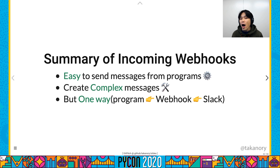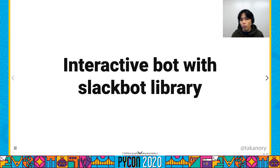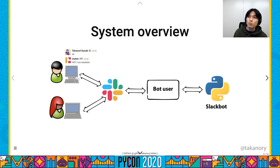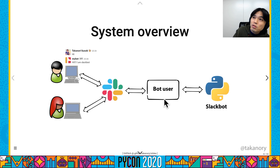Next, I will explain how to create an interactive bot with the Slackbot library. This is the system overview: when I send a 'hi' message to Slack, the bot gets the Slack message and Slack bot responds: 'Hi, I am Slack bot.' This is interactive.